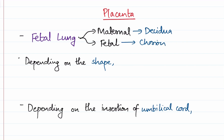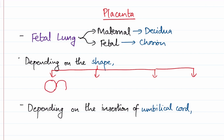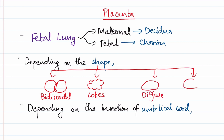Now let's move to the classification. Depending upon the shape of placenta, there are several shapes, out of which we'll discuss four main shapes. First is a discoid shape — disc-shaped. Sometimes it could also have a bidiscoidal shape, that is the shape of two discs together. The placenta could also be lobulated, containing several lobes. It could also have a diffuse shape, and there could be fenestration — meaning holes or depressions inside the placenta. So these are the four main types.